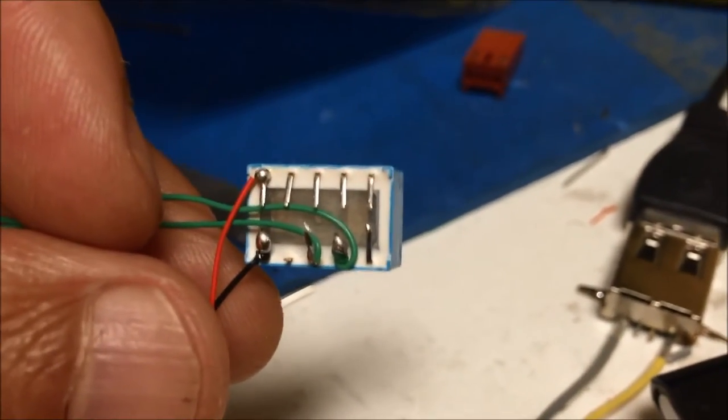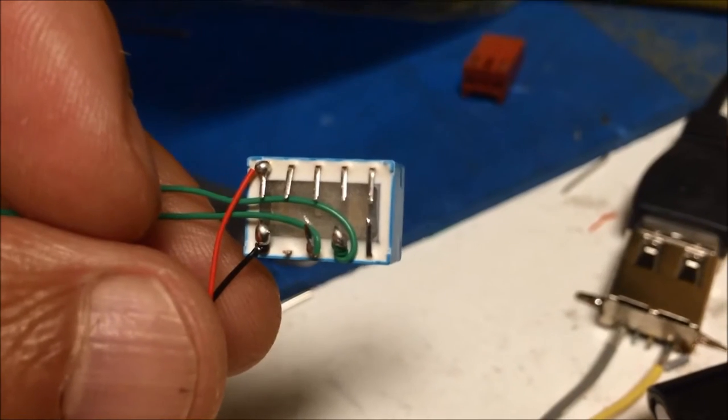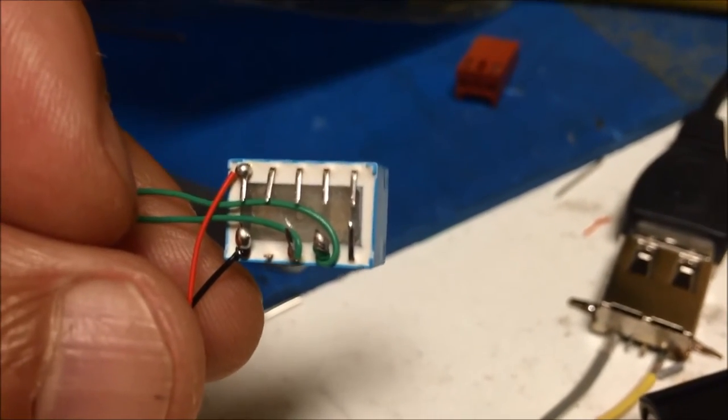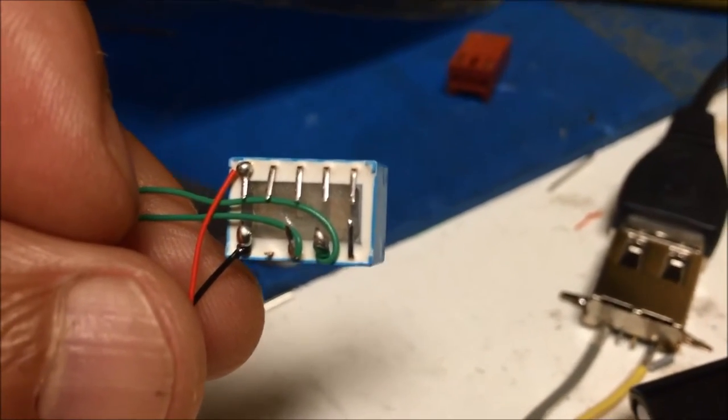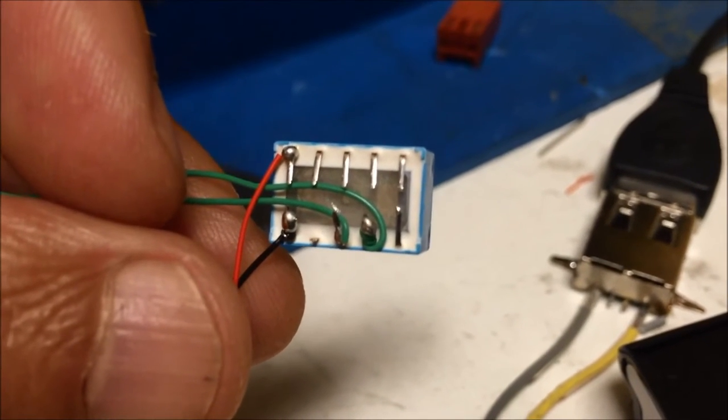That will short the 2.2K across the original resistor, so that it will be 1K.